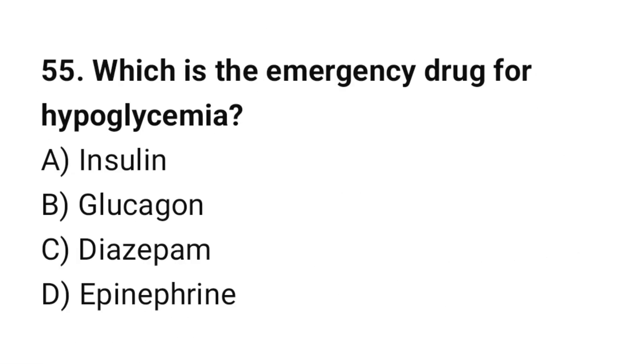Question number 55: Which is the emergency drug for hypoglycemia? The correct option is B: Glucagon.